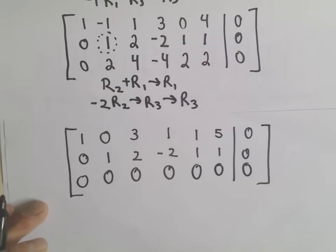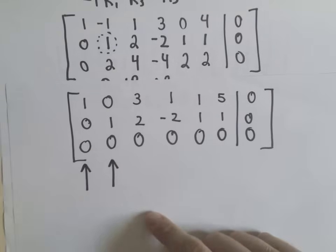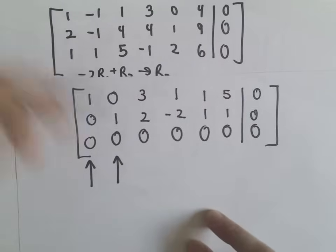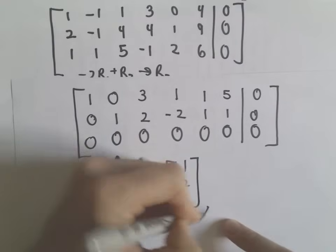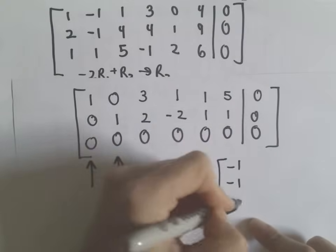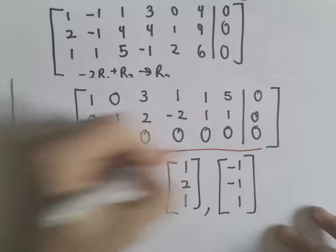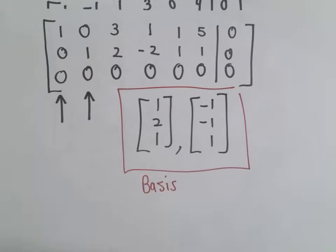So basically, it says the vectors that were in column 1 and column 2 in this case, we'll go back to our original matrix. So the original matrix, the first two vectors we had were the vector [1, 2, 1], and in the second column we had the vector [negative 1, negative 1, positive 1]. It says that these two vectors will provide a basis for that set of vectors that we started with. So that's all there is to it. You're just doing a little row reduction.